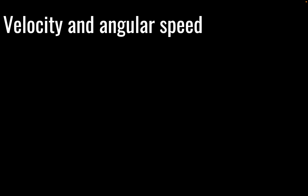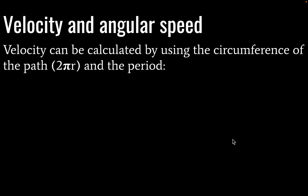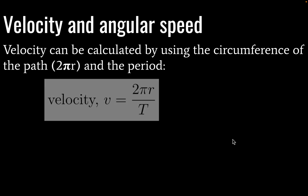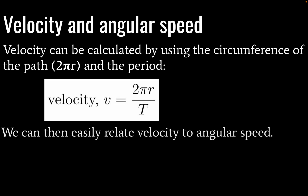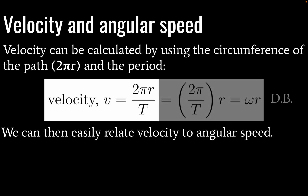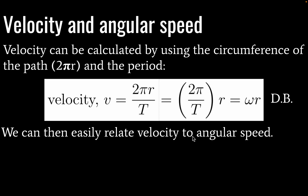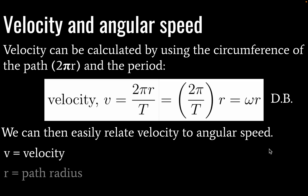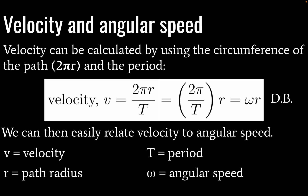Next we're going to look at the relationship between velocity and angular speed. Velocity is calculated using circumference and period. We can relate velocity to angular speed just by substituting 2π/T with omega. So this equation — given in the data booklet — is velocity equals angular speed times the radius of the circle: v = ωr.